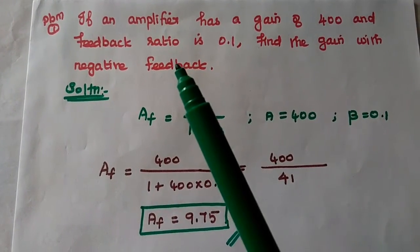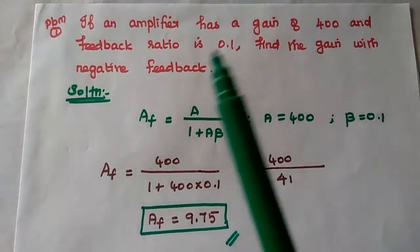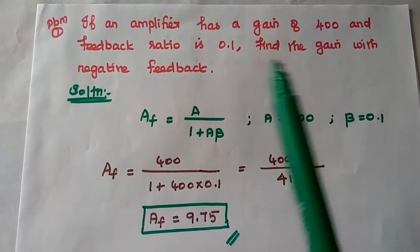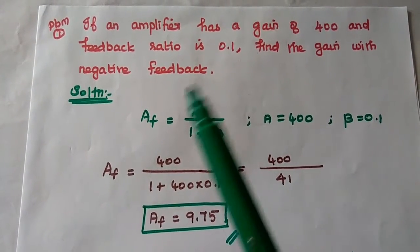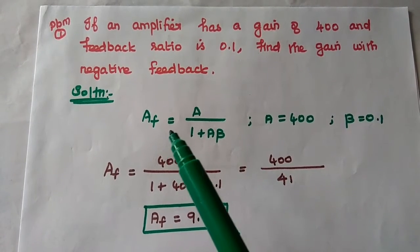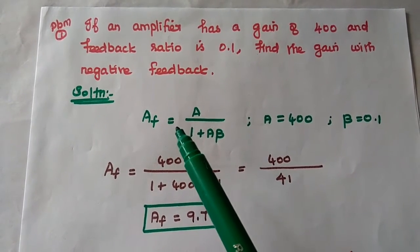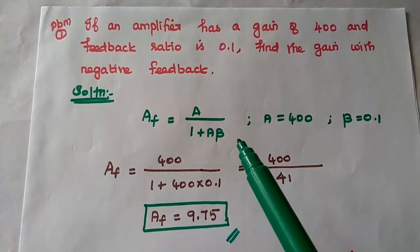If an amplifier has a gain of 400 and feedback ratio is 0.1, find the gain with negative feedback. The gain with feedback is given as AF = A / (1 + A·β).